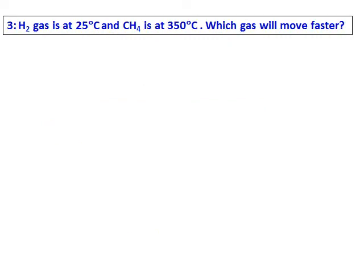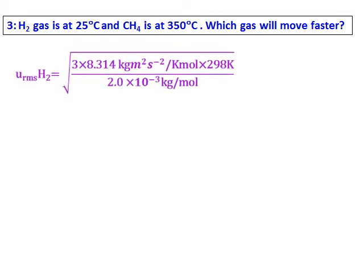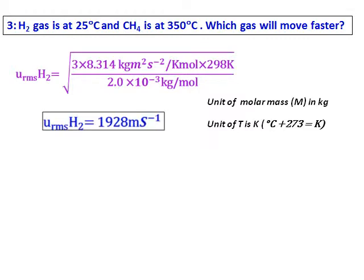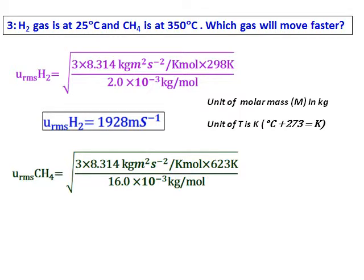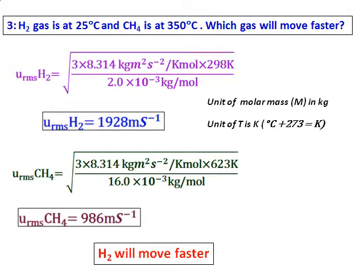Question 3: Hydrogen gas is at 25°C and methane is at 350°C — predict which moves faster. Calculate the RMS velocity for hydrogen, converting temperature to Kelvin and molar mass to kilograms, giving 1928 m/s. Similarly calculate for methane. The speed of hydrogen is much larger than methane's. Despite being at a lower temperature, hydrogen is a much lighter gas than methane and therefore moves faster.